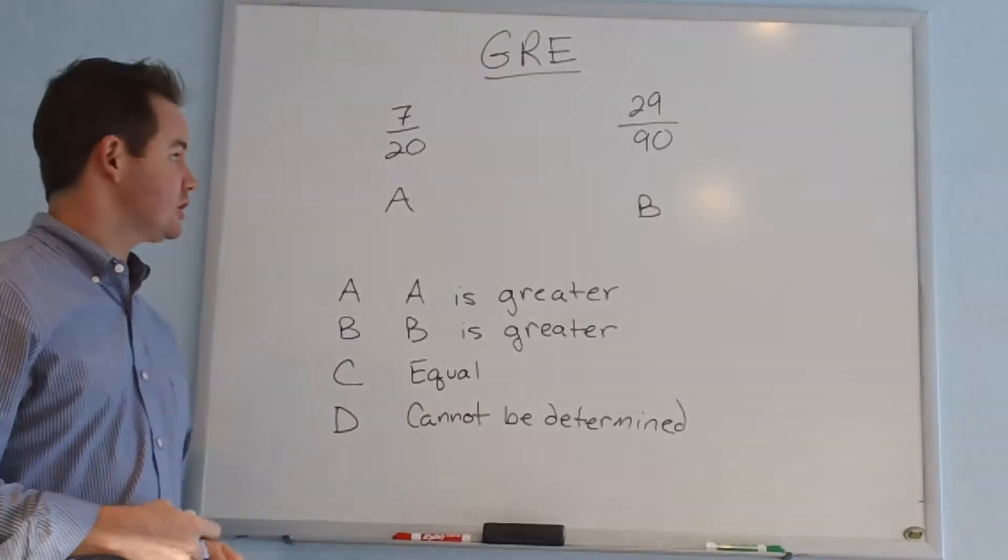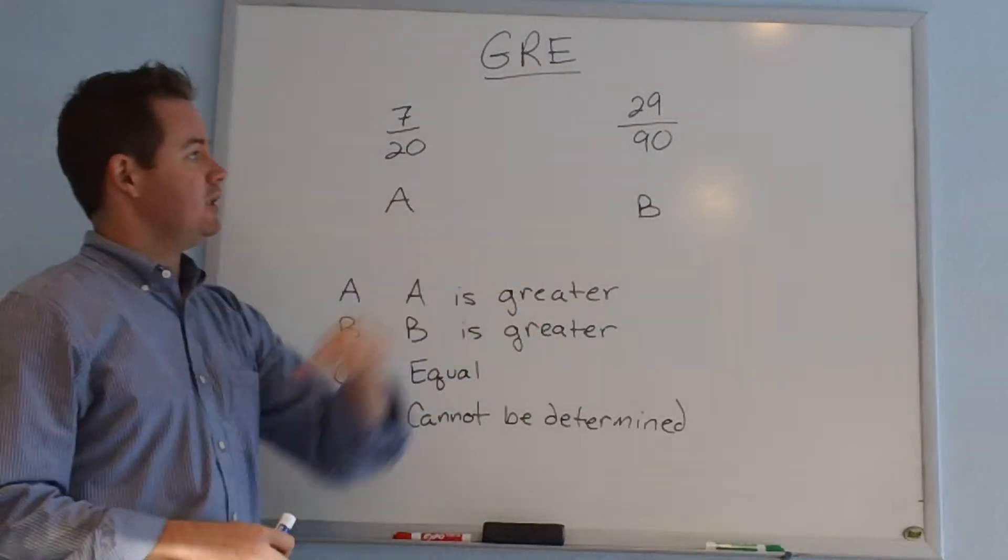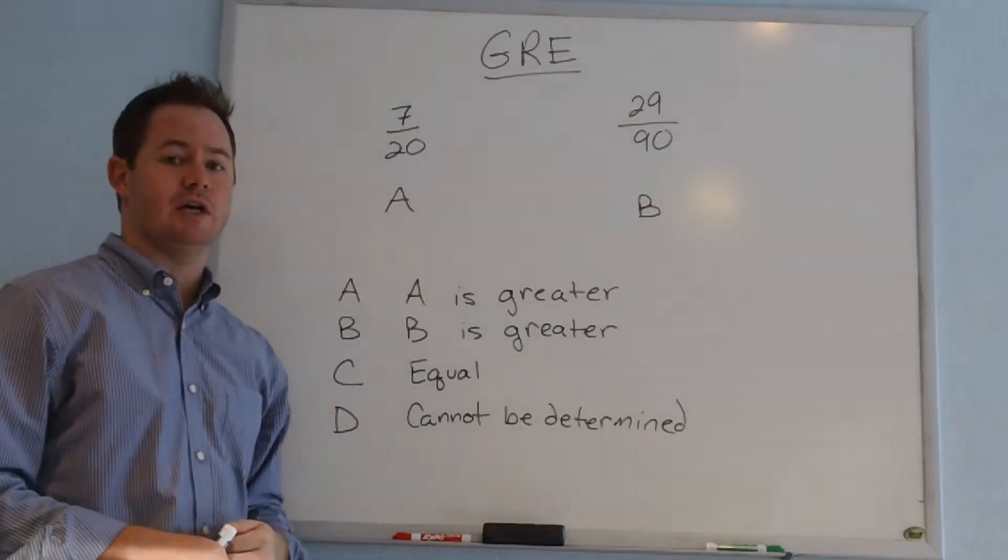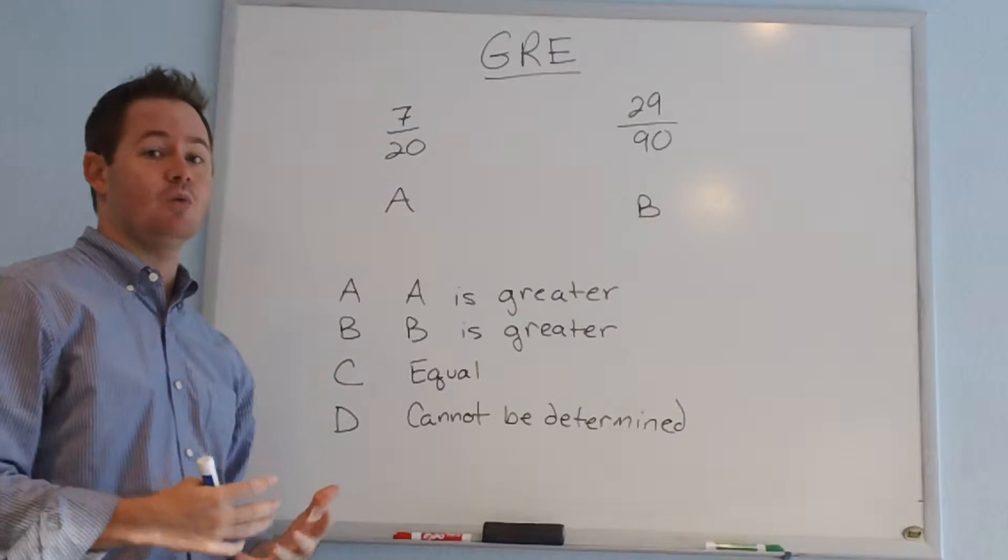Let's take a look at this question. In column A, we have 7 over 20, and in column B, we have 29 over 90. The GRE asks us to compare these two values to tell which one is greater.